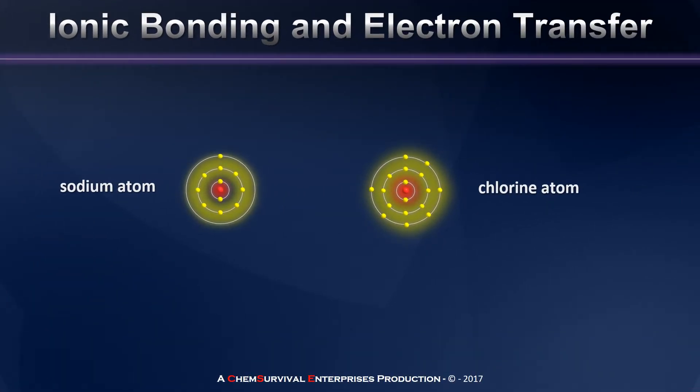Let's start our discussion of ionic bonding with an example. This is a sodium atom and a chlorine atom, and most of us are already aware that these two elements commonly combine to form a material known as sodium chloride, also commonly known as table salt. But what exactly are the interactions and forces that hold these atoms together when they are in this sodium chloride compound?